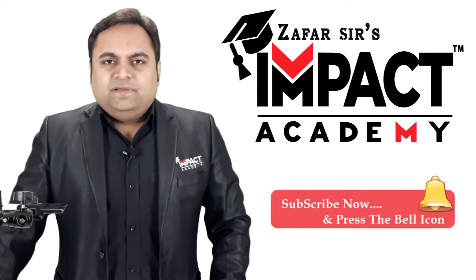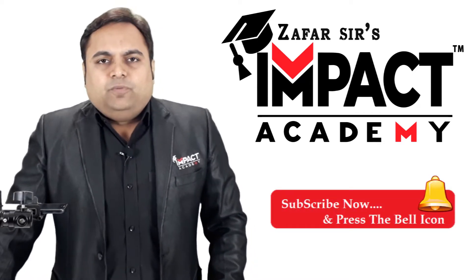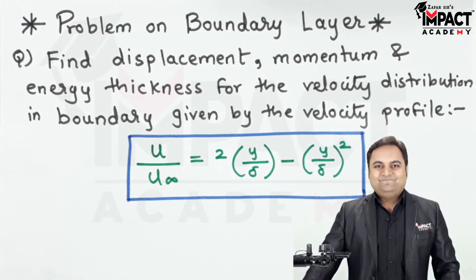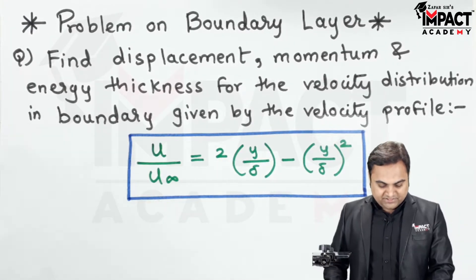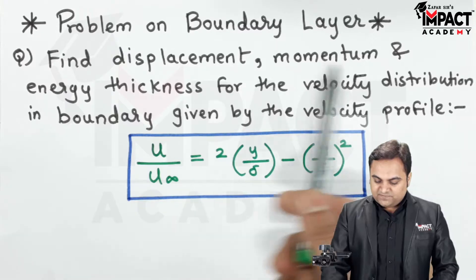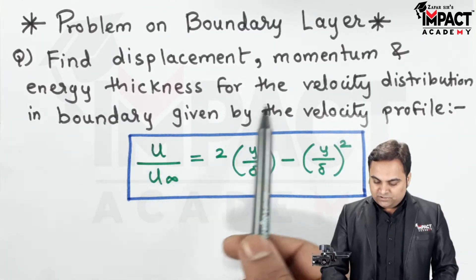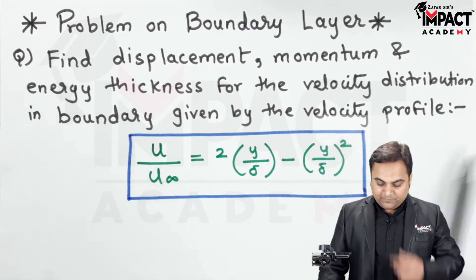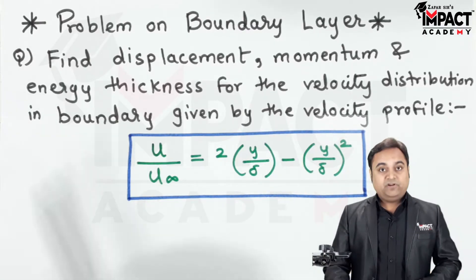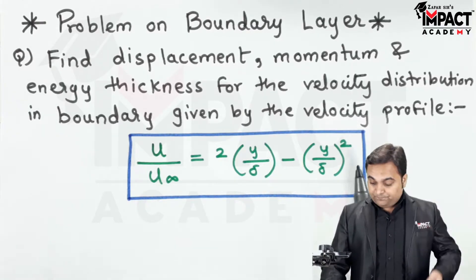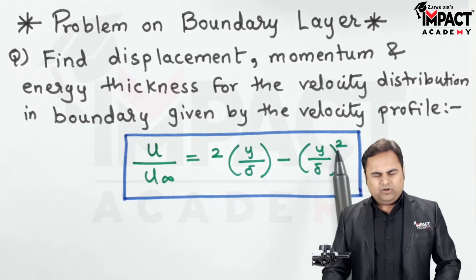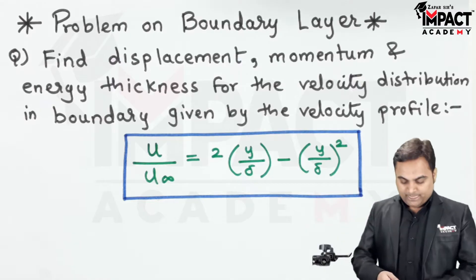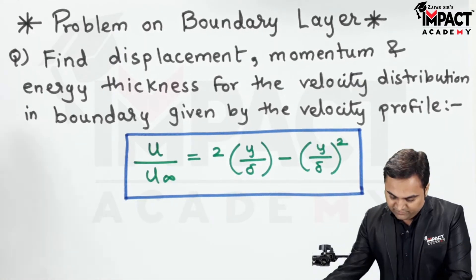Hi friends, in this video I will be explaining a problem on boundary layer. The question is: find the displacement, momentum, and energy thickness for the velocity distribution in the boundary layer, given by a velocity profile. This velocity profile is also called a square profile or parabolic profile because the power is 2.